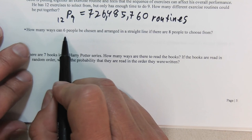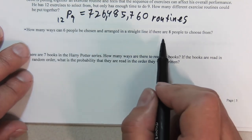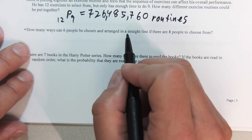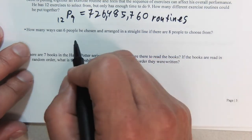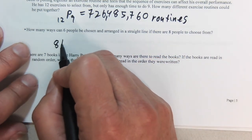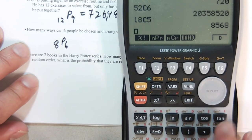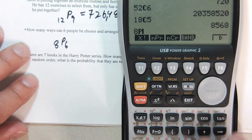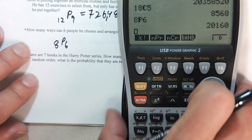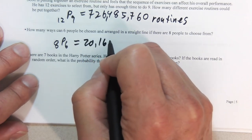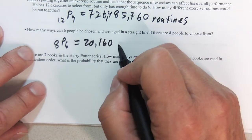How many ways can 6 people be chosen and arranged in a straight line if there are 8 to choose from? So again, sitting in front of or sitting behind someone is different, so the order does matter in that case. That's going to be 8 permutation 6. 20,160 arrangements.